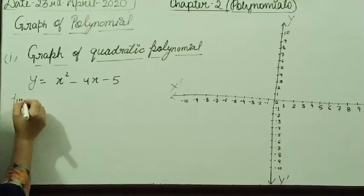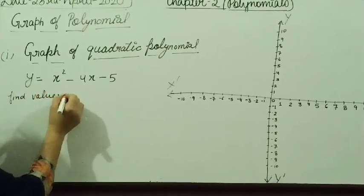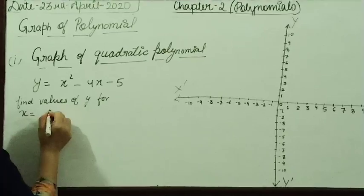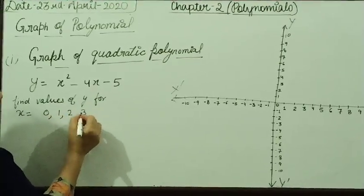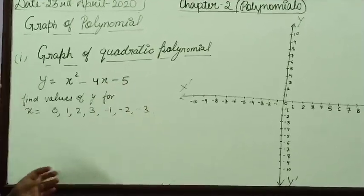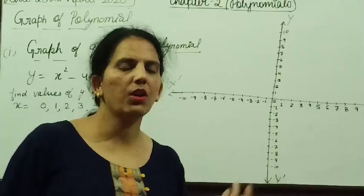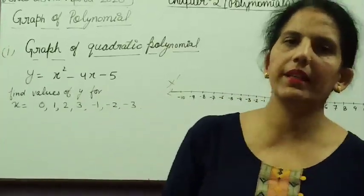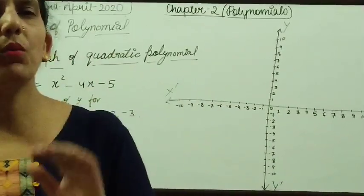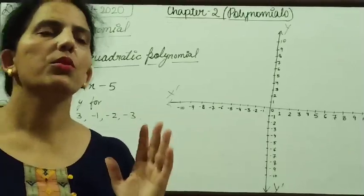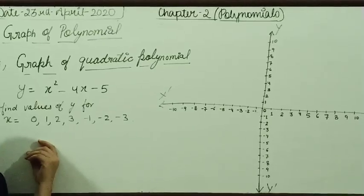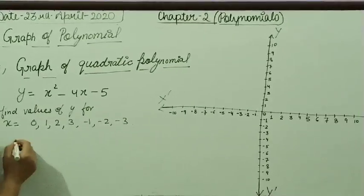Find values of y for x is equal to 0, 1, 2, 3 or minus 1, minus 2 or minus 3. We can consider any of the values, but if we take small values, then the exact graph will be there as well as calculation can be easy. That is why always take small values which are around zeros. So, now consider the table.